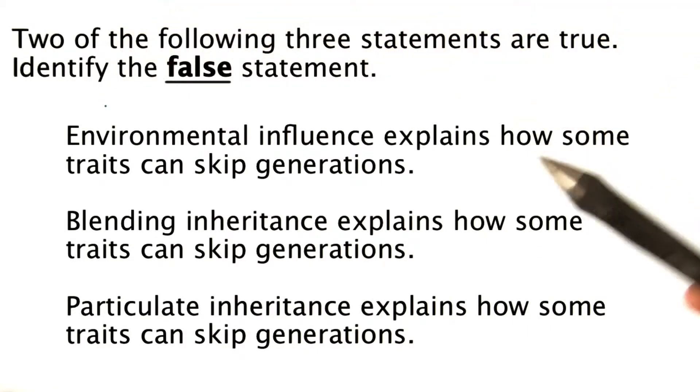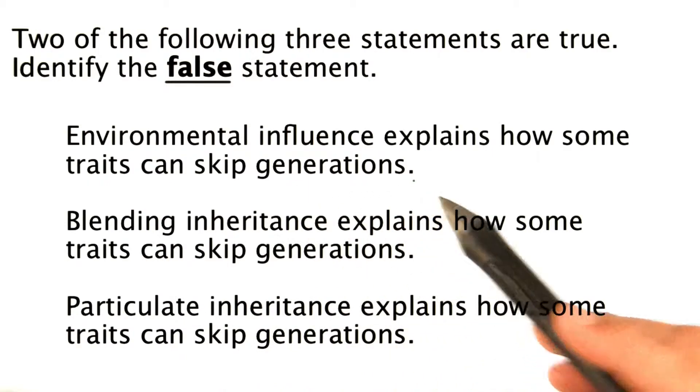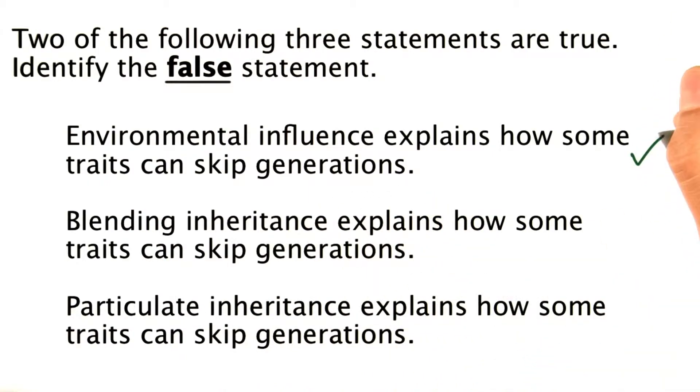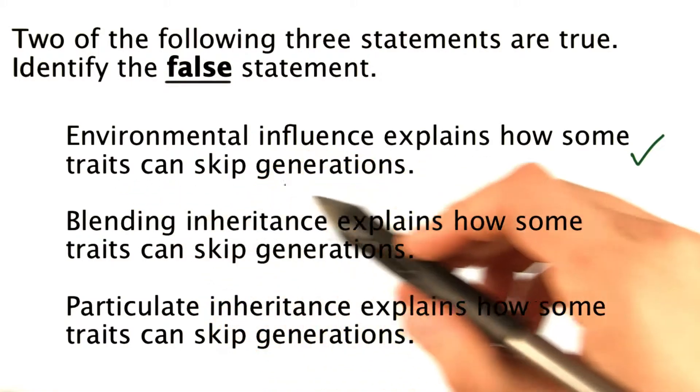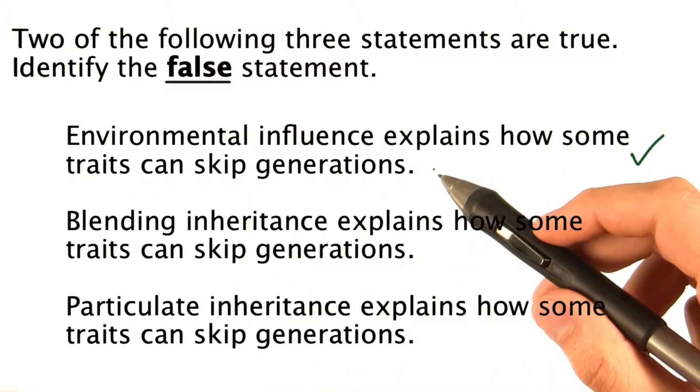Okay, so let's take a look at the true statements here. Environmental influence explains how some traits can skip generations. If you're affected by something in your environment that someone in your family or in another generation doesn't have exposure to, then they may not show that trait.